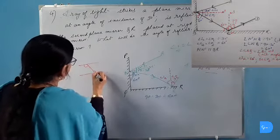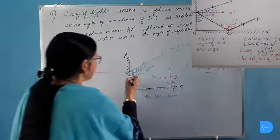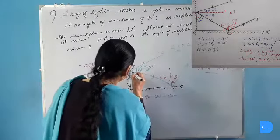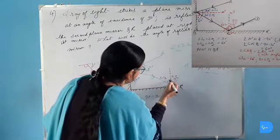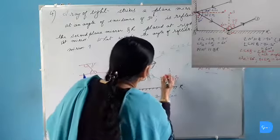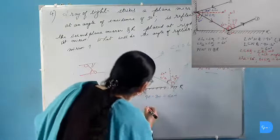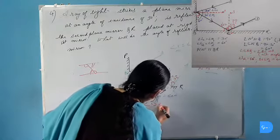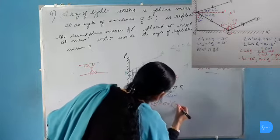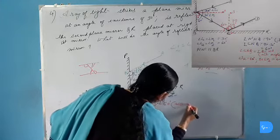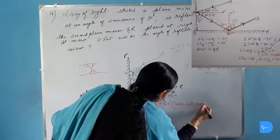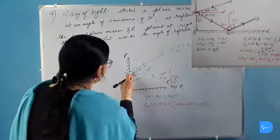These alternate angles are always equal. So here is the same case. This angle is 60 degrees. So this angle will be 60 degrees. So angle I2 will be 60 degrees because it is alternate angle to this.